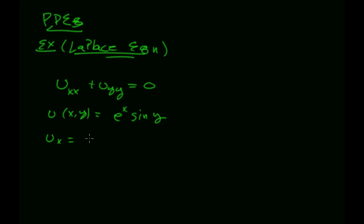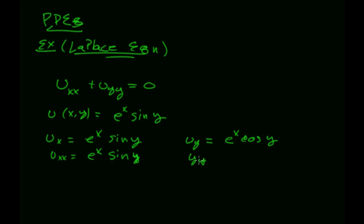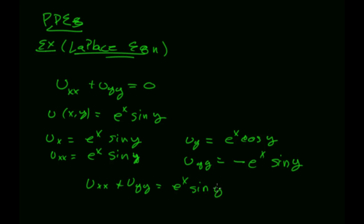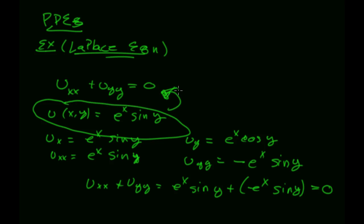If I take u with respect to x, I get e to the x sine y, because e to the x stays as e to the x. If I take the second partial with respect to x, I again get e to the x sine y. Now if I take u with respect to y, I get e to the x cosine y. And if I do the second partial with respect to y, cosine is going to go to negative e to the x sine y. So u_xx plus u_yy equals e to the x sine y plus negative e to the x sine y, and trivially that's equal to 0. So this multivariate equation solves that partial differential equation.